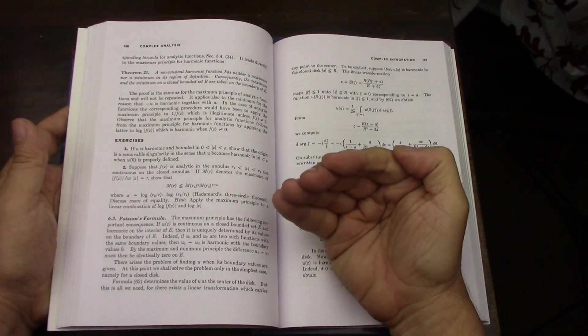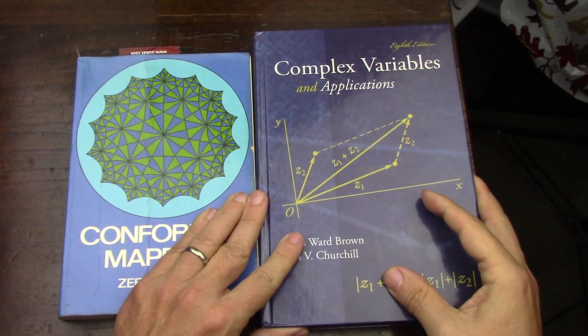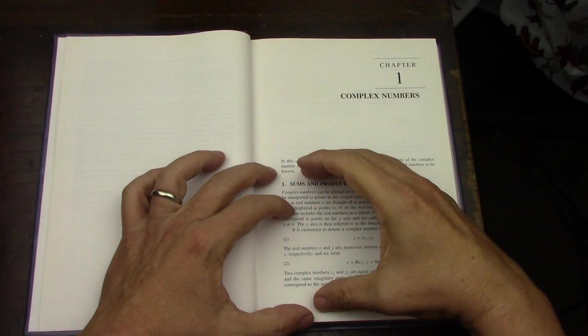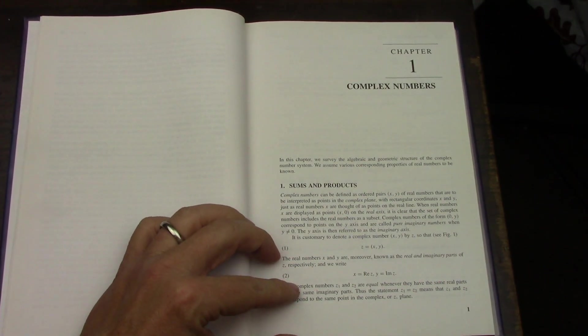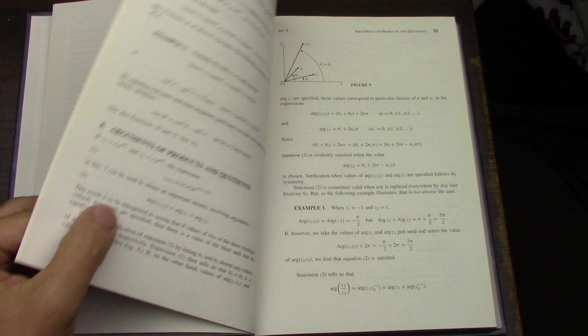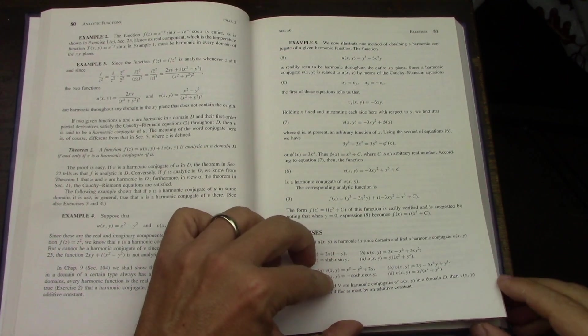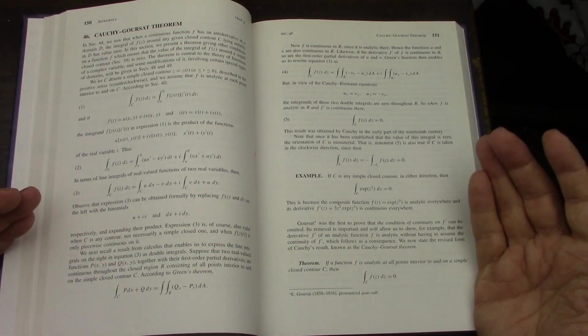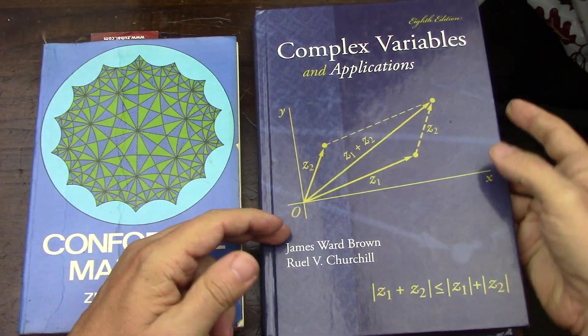Both books are really fantastic. Churchill is a classic, has been used by trillions of people who have learned complex variables in engineering schools throughout the world. It is exquisitely written. I doubt anybody could find a typo in this book, even though it's gone through a gazillion editions. This is the eighth, and I know there are later ones. It's really Churchill's book. Churchill passed away, Brown took it over.